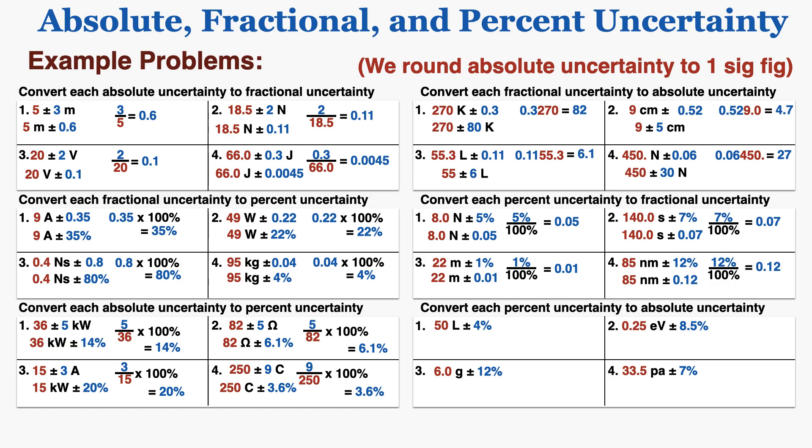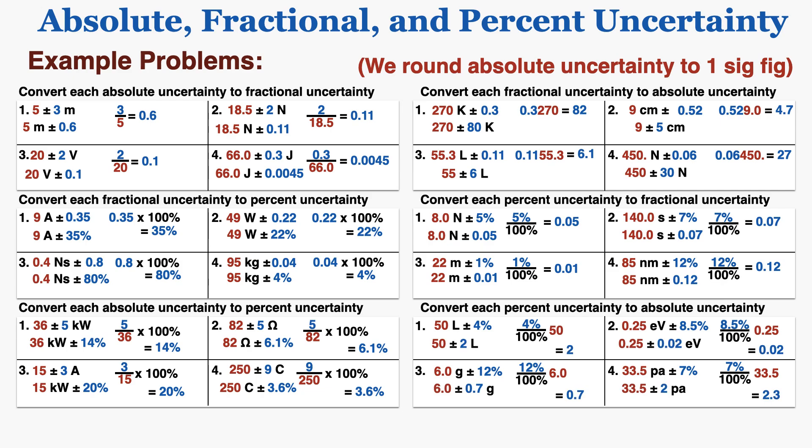Finally, I'll convert each percent uncertainty to absolute uncertainty by dividing by 100% and then multiplying by the original number. These are the absolute uncertainties that result. Notice that I'm not changing the actual value of the uncertainty — I'm just writing it in different ways. In each problem, the answers represent the same values; it's just the expression that changes between absolute, fractional, and percent uncertainty, while the underlying value remains the same.